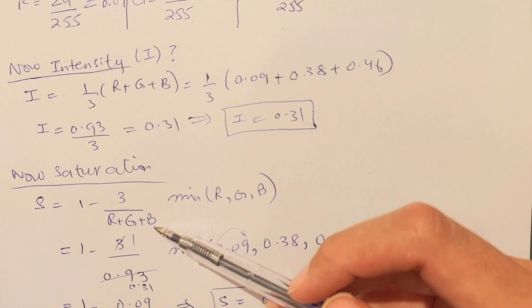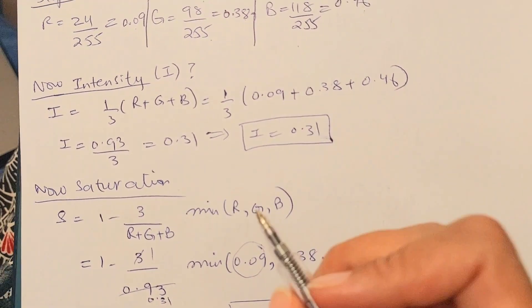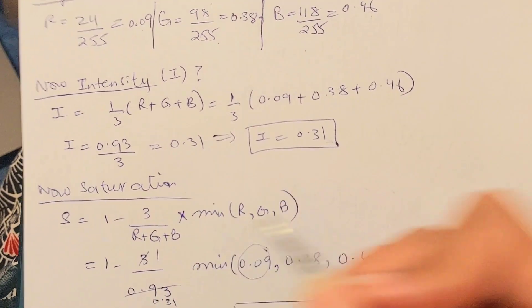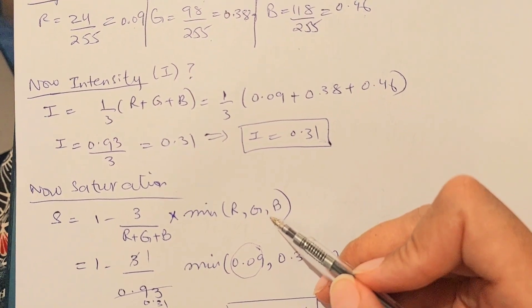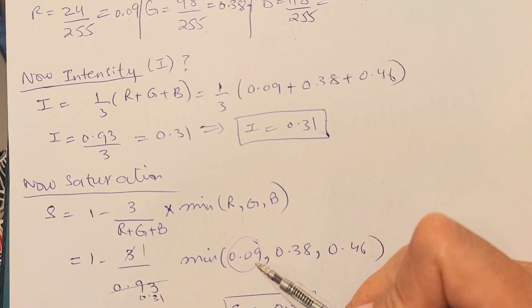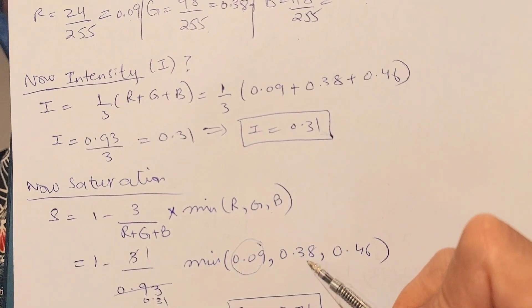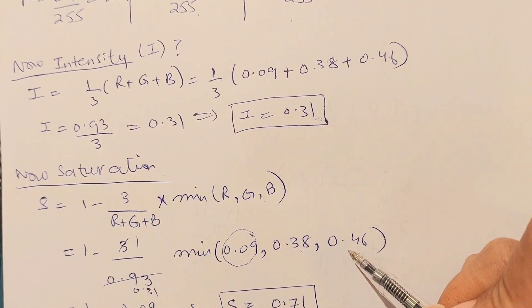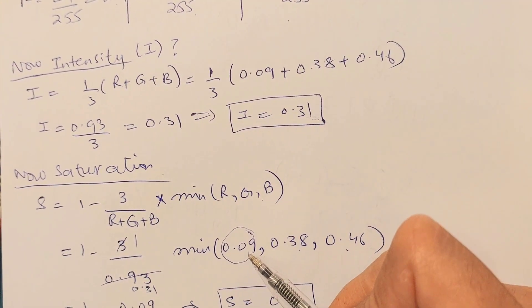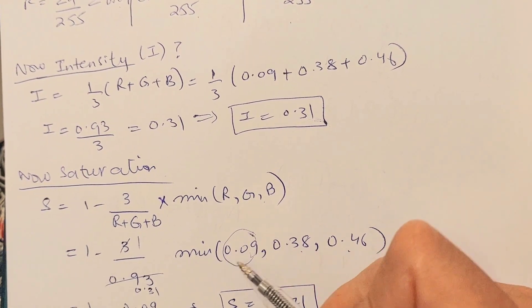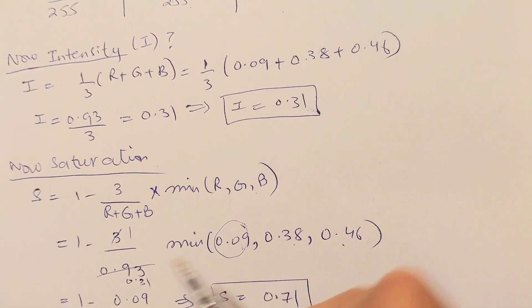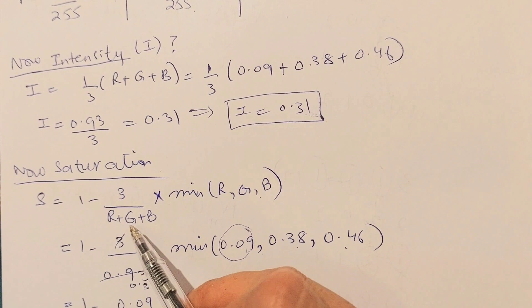Saturation is 1 minus 3 divided by the sum of R, G, and B values, and this all is multiplied with the minimum value out of R, G, and B. So R was 0.09, G was 0.38, and B is 0.46.